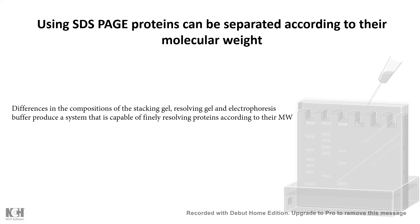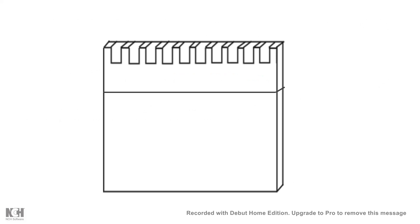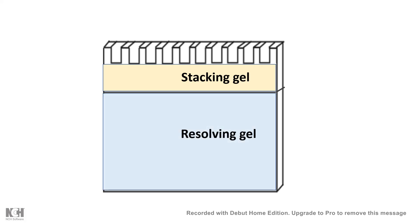SDS-PAGE, or SDS polyacrylamide gel electrophoresis, is a technique by which we can separate proteins according to their molecular weight. This system is based on gel-based separation, and the gel is a complex of two types: a stacking gel and a resolving gel. Using a combination of these two gels, one can finally resolve proteins according to their molecular weight. The stacking gel is on top where you load the samples, and it has a pH of 6.8, while the resolving gel has a pH of 8.8.